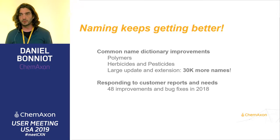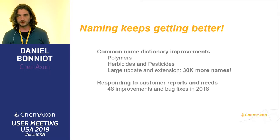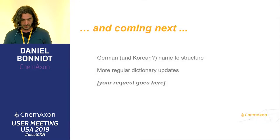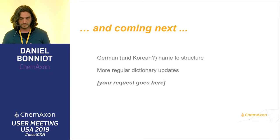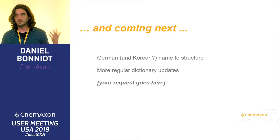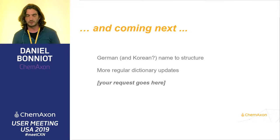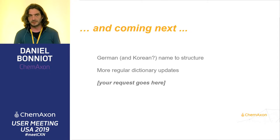Behind the hood, there are a lot of smaller things we do constantly based on user reports and feedback — small bug fixes, some feature requests to make things smoother. We are very happy to support all our users. Coming up, we are considering adding German name-to-structure support, because that's quite important especially in the field of patents. Possibly also Korean. We also want to continue streamlining our process to build the dictionary, which has many sources, so we can keep it up to date very frequently. And, of course, user requests are given high priority — it keeps being improved based on what's actually important and needed by our customers.